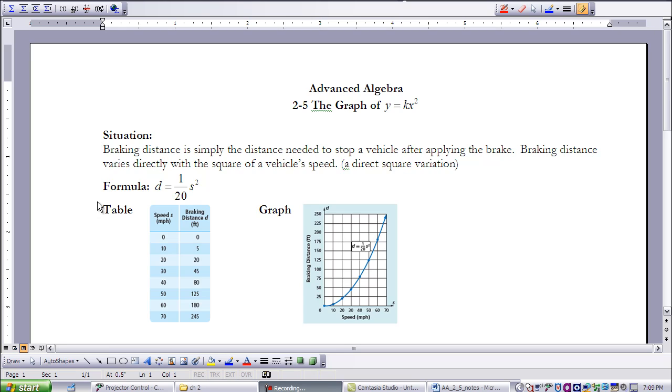It's represented by the formula d equals 1 over 20s squared. And we have a table of values that are generated. So if your car is traveling at 10 miles per hour, you need 20 feet of braking distance. If it's traveling at 30 miles per hour, you need 45 feet of braking distance.